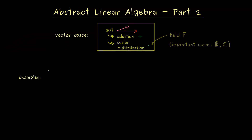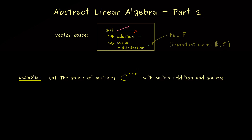The first example you should already know if you have watched my original linear algebra series. Namely, we want to consider the set of matrices with m rows and n columns. If the entries can come from C, we write it as C to the power m times n. We already know how to add two matrices and how to scale one with a complex number, so we immediately get a complex vector space.